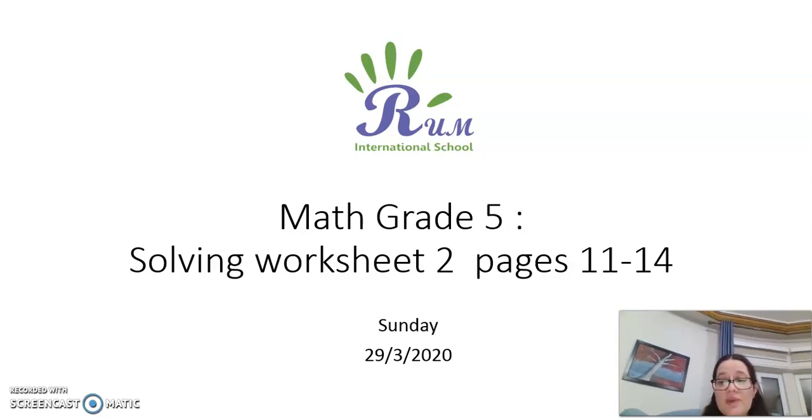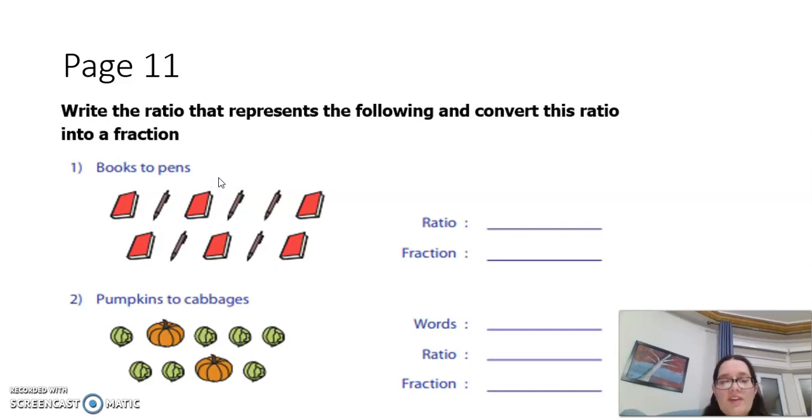Let's start solving page 11. I want you to write the ratio that represents the following and convert this ratio into a fraction. What is the ratio of books to pens? Make sure to use the same order, books to pens. As we count the number of books: 1, 2, 3, 4, 5, 6 to 1, 2, 3, 4, 5, so the ratio is 6 to 5, and to convert it into a fraction it's 6 out of 5.